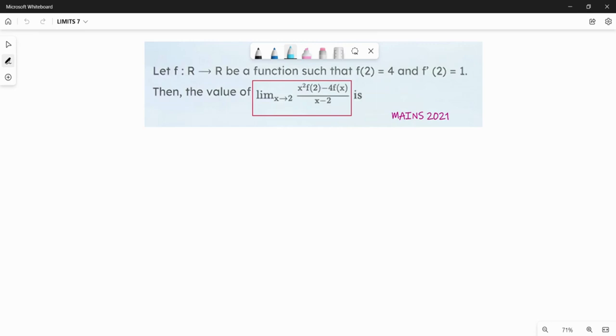Then the value of the limit. First let's check the form. x square, so 2 square, f of 2 minus f of x is 2, x minus 2. This is clearly an indeterminate form.